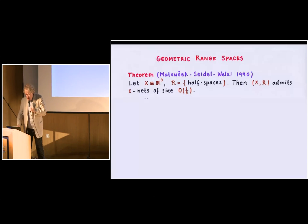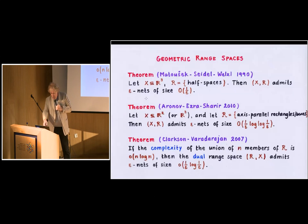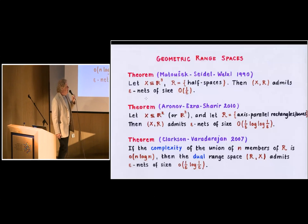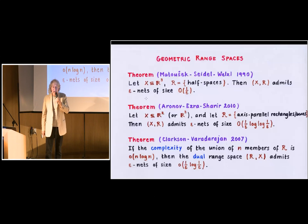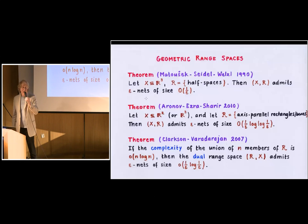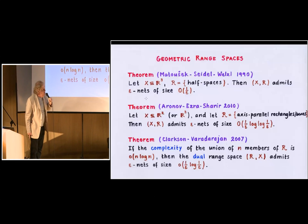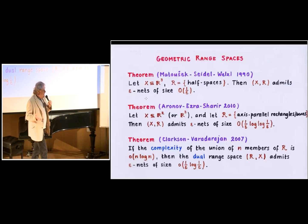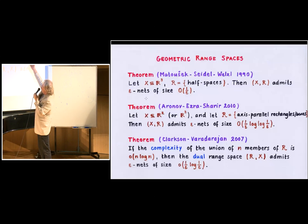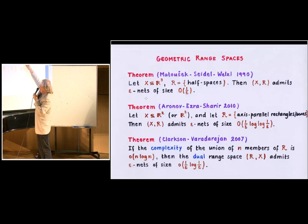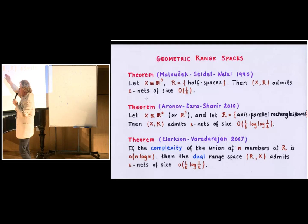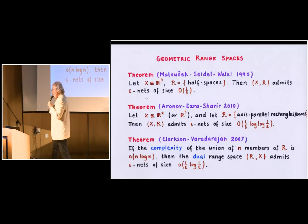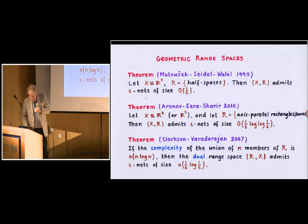So the logarithmic factor is not needed. And then there was, shortly after, not shortly after, in fact, quite a few, twenty years later, Aronov, Ezra and Sharir made an improvement in another situation, when we are in the plane, and the ranges are axis-parallel rectangles. Then we improved the one over epsilon times log one over epsilon upper bound to one over epsilon times log log one over epsilon. But everybody felt, and that was the general conjecture, that this was really kind of a technical problem with the proof, and so the truth is not one over epsilon log one over epsilon, they proved that it is less, but the truth must be really linear.